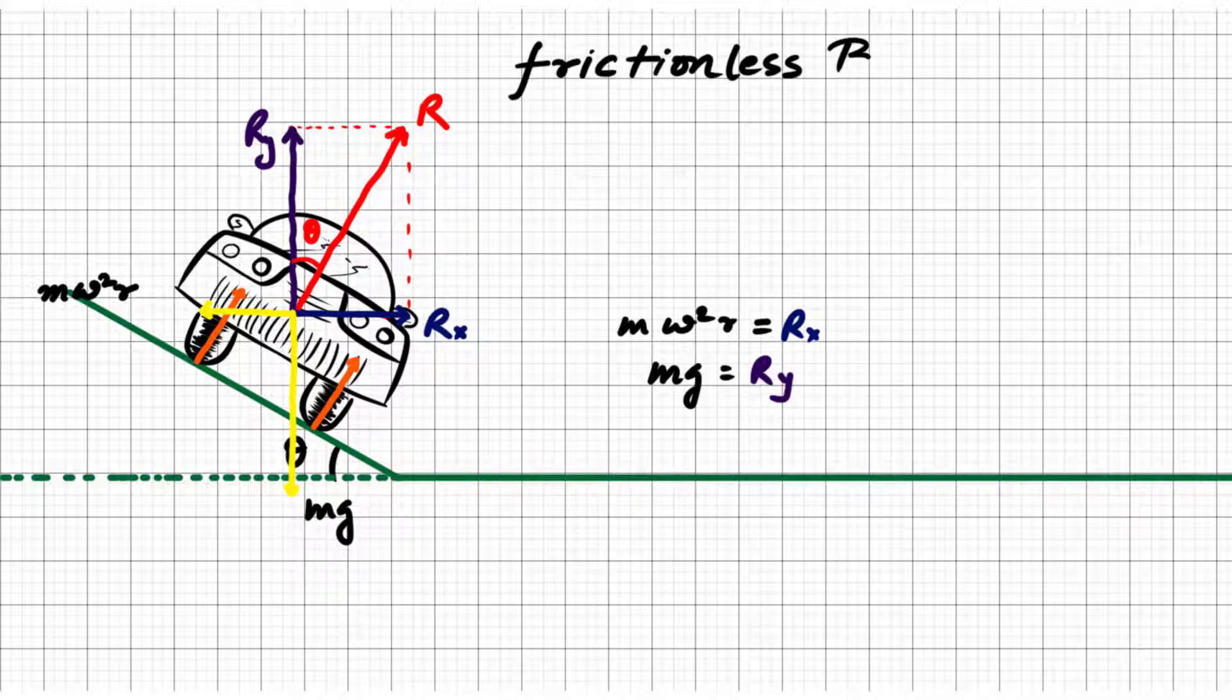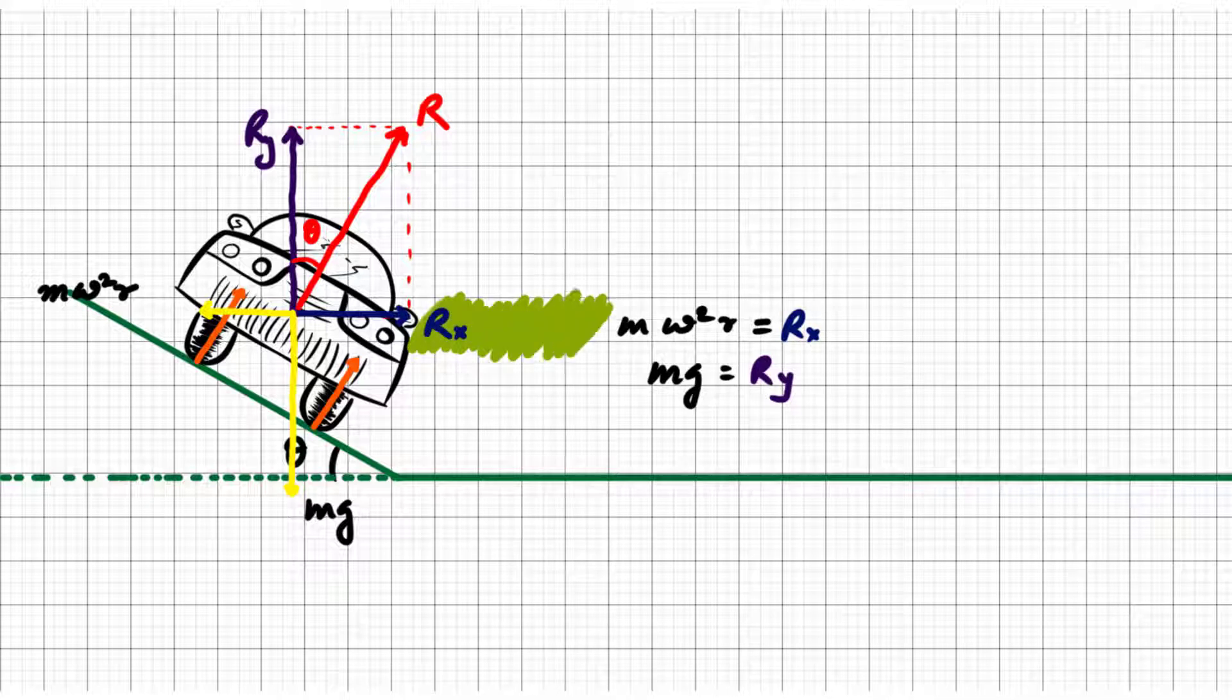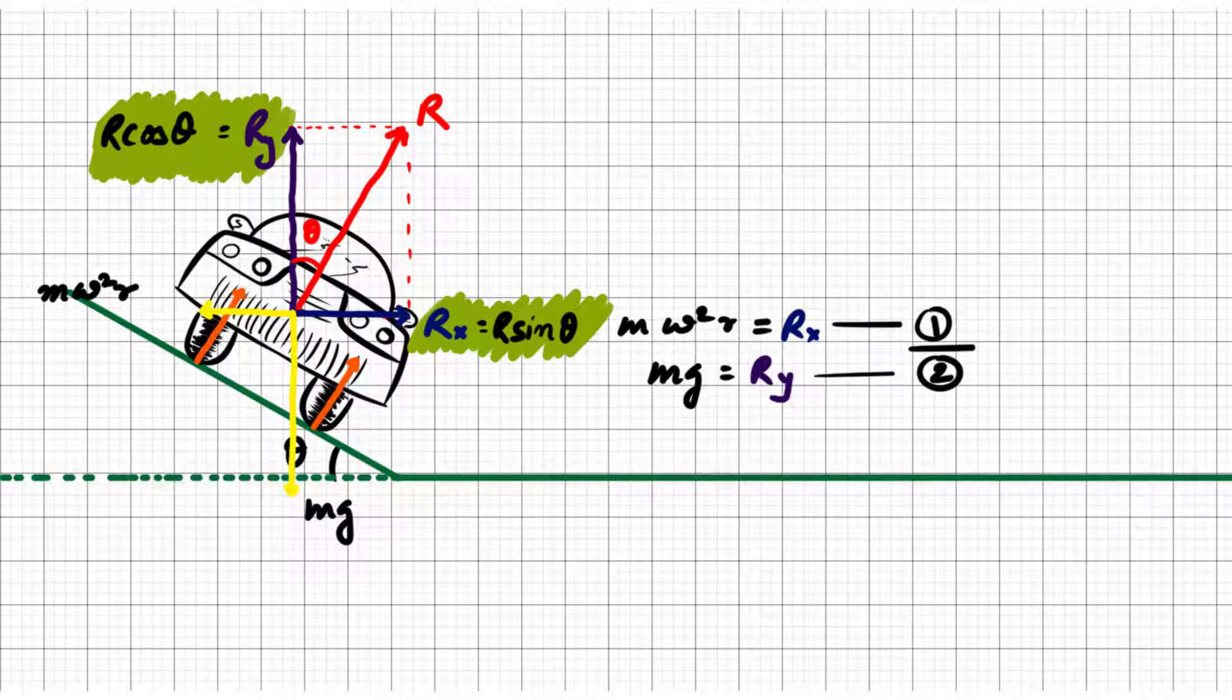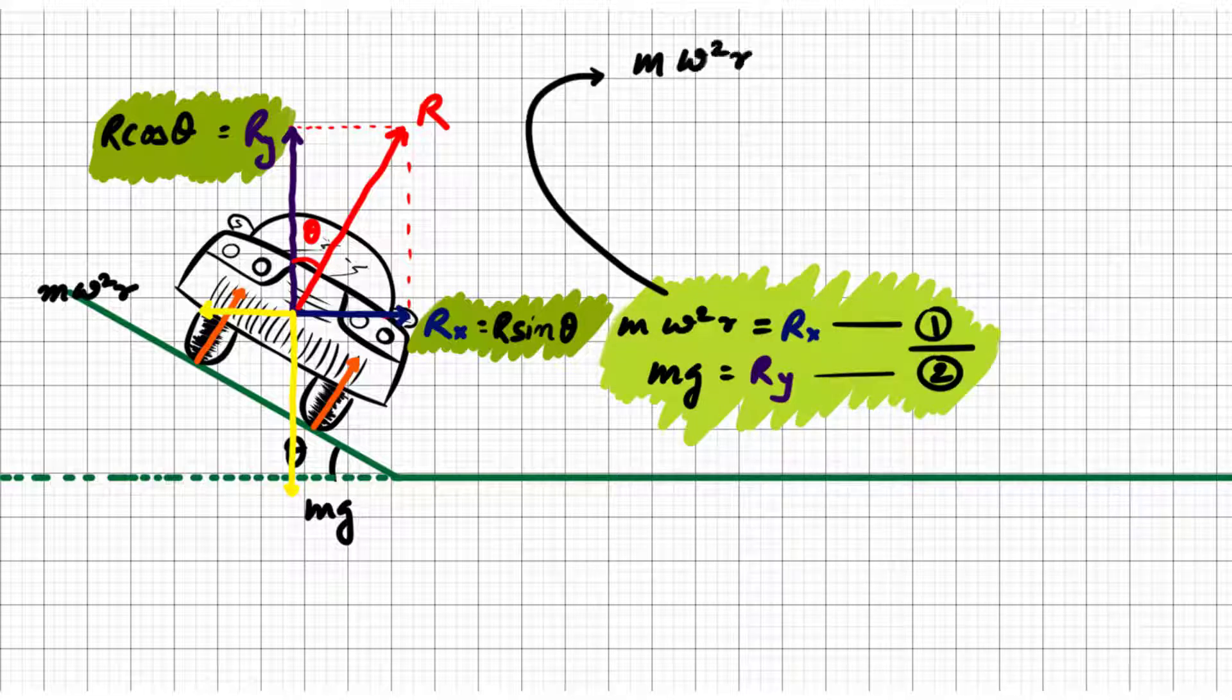Such a case is known as frictionless banking, since friction in itself is a reactive force, and if there is no unbalanced force, then there will be no friction. Now we can divide equation 1 by 2 to get the required velocity for the frictionless banking.